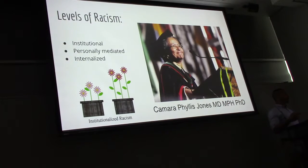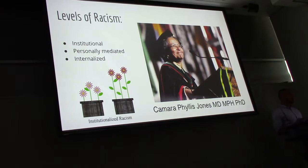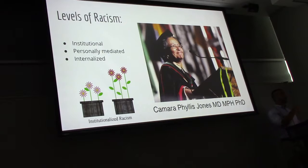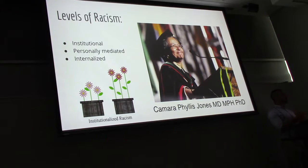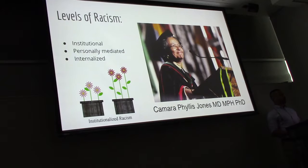One of the leaders of this field is Dr. Camara Phyllis Jones. She's a senior fellow and adjunct professor at Morehouse and is board certified in family medicine. She uses allegory to explain how racism works in our society and how it impacts people's health. She has a really beautiful allegory called the Gardener's Tale, and in it she talks about three levels of racism: institutional, personally mediated, and internalized.